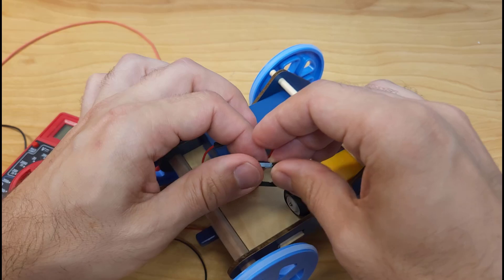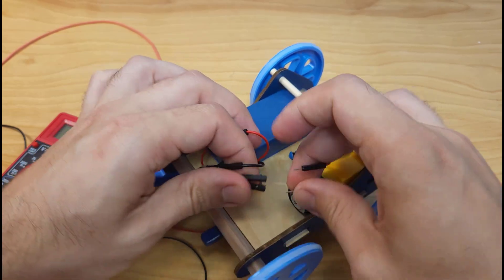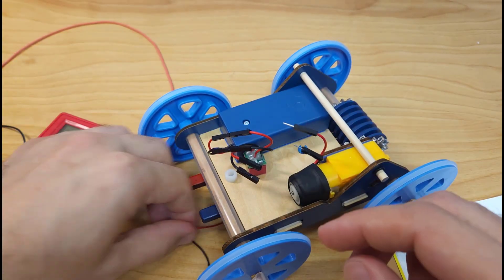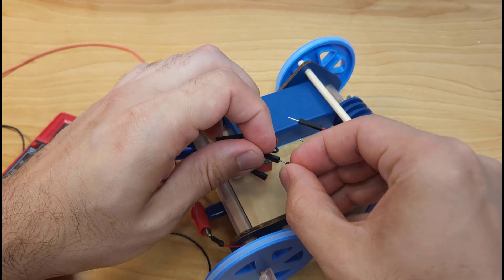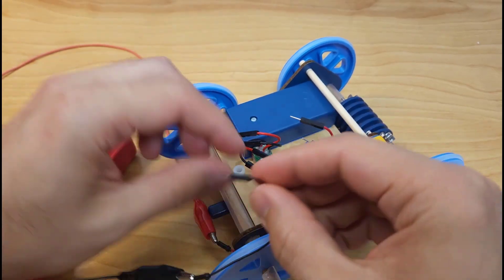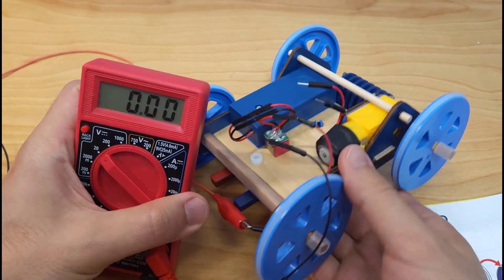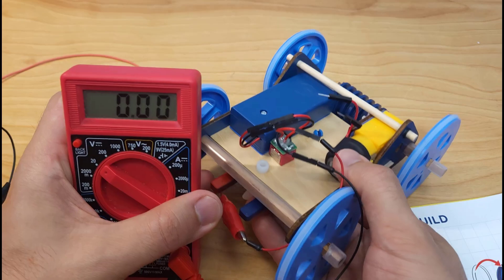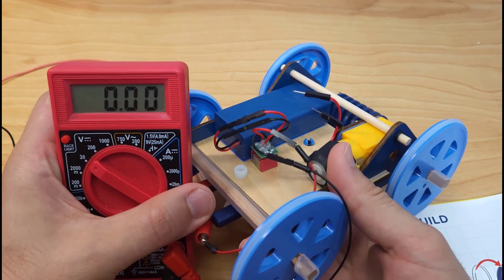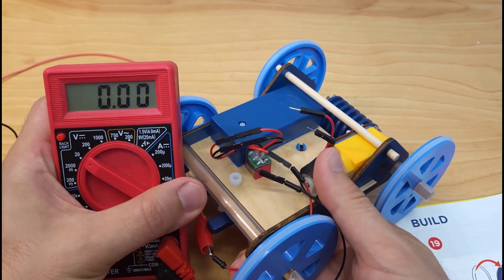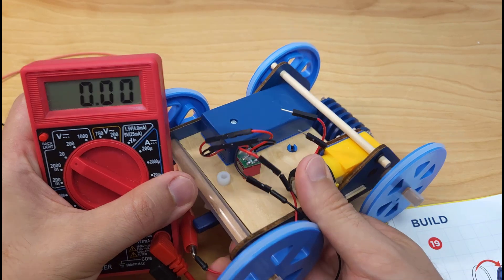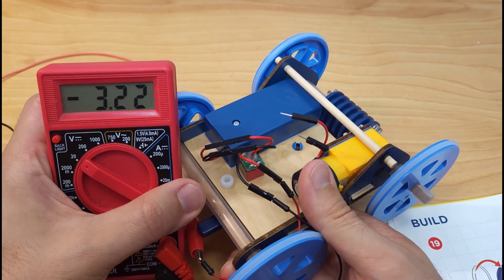So another way I can demonstrate this is if I unplug the motor and take my multimeter and connect to the output from the switch, I would expect to see either 3 volts or negative 3 volts from the battery pack, depending on the polarity here. But you can see I am getting zero. So I'm going to reach under there, toggle the switch. I am getting, oh, there we go.